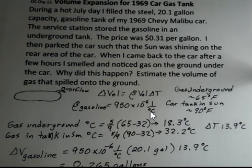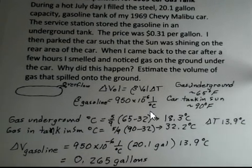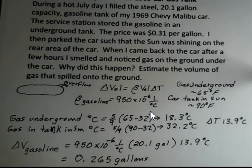So what was the change in volume? We take the expansion coefficient times the original volume and multiply it by the change in temperature, and I get 0.265 gallons. That's the extra volume that the gasoline was taking up. So is that the end of the problem? 0.265 gallons of gasoline spilled out?